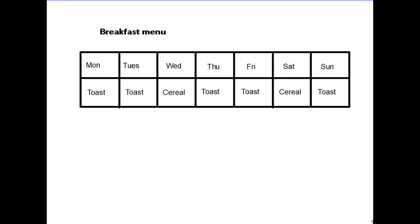Here's a quick example to highlight how straightforward this can be. Imagine this is a breakfast menu at a guest house, and you walk down one morning without knowing what day it is, looking at the probability of being served cereal. There are 7 days in a week, so the whole probability comes from the number 7. How many days do they serve cereal? Wednesday and Saturday — so 2 days out of 7. There is your probability: 2 out of 7, a two-sevenths chance that you will get cereal for breakfast.